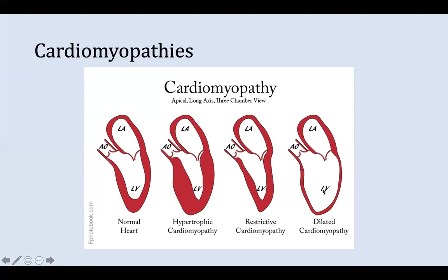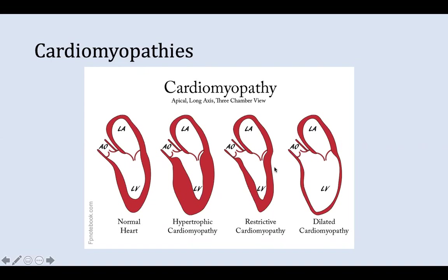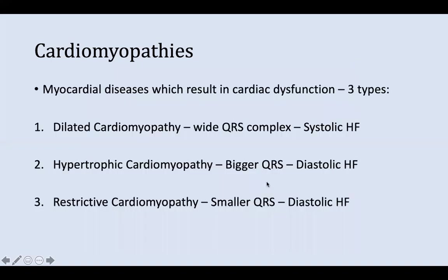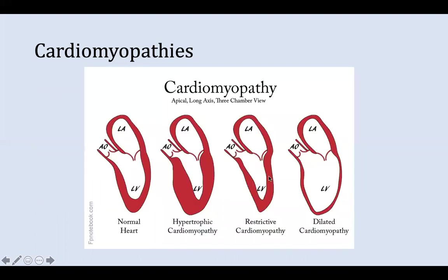In restrictive cardiomyopathy, there's decreased cardiomyocyte compliance, usually due to infiltration of non-contractile, inelastic materials — such as misfolded proteins in the case of amyloidosis, granulomas, fibrous tissue, and fibroelastosis. All of these decrease cardiomyocyte compliance, so there won't be enough filling, which is why it causes diastolic heart failure.